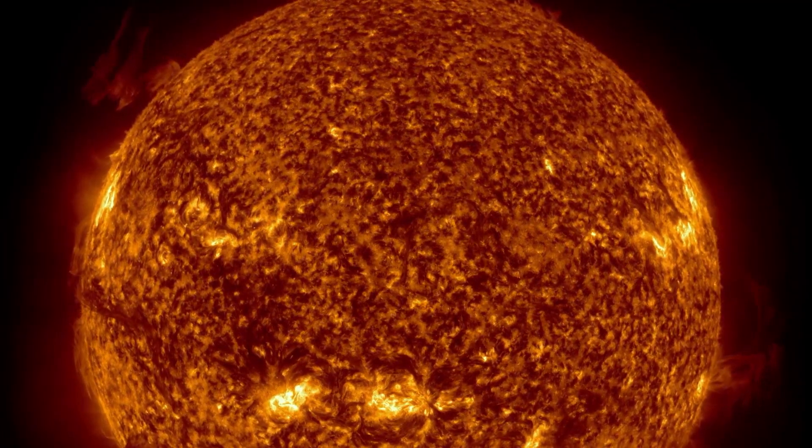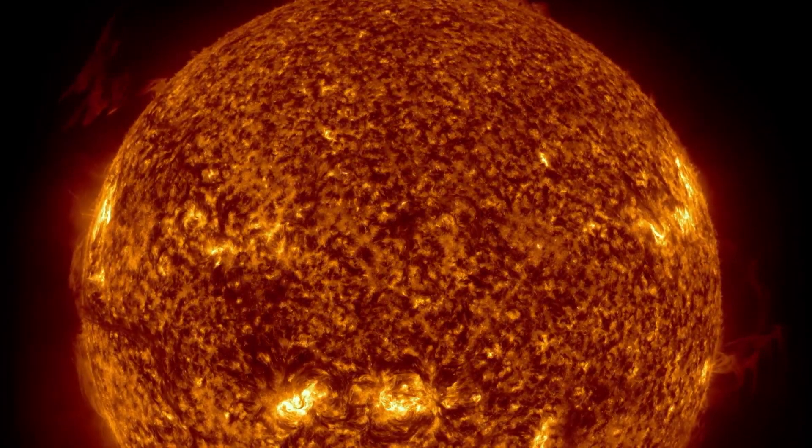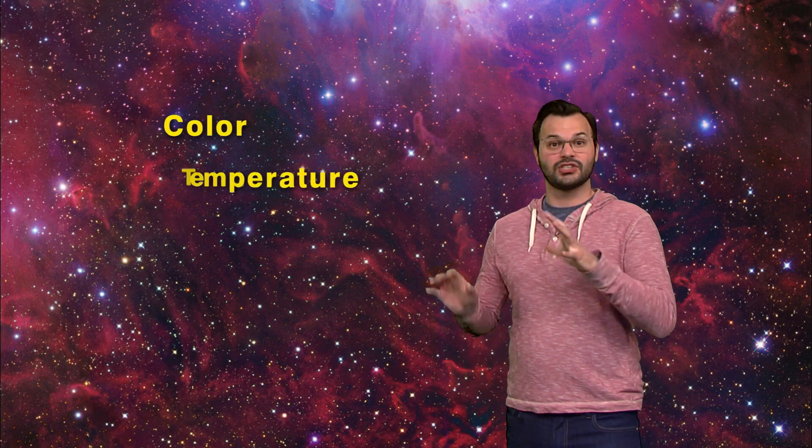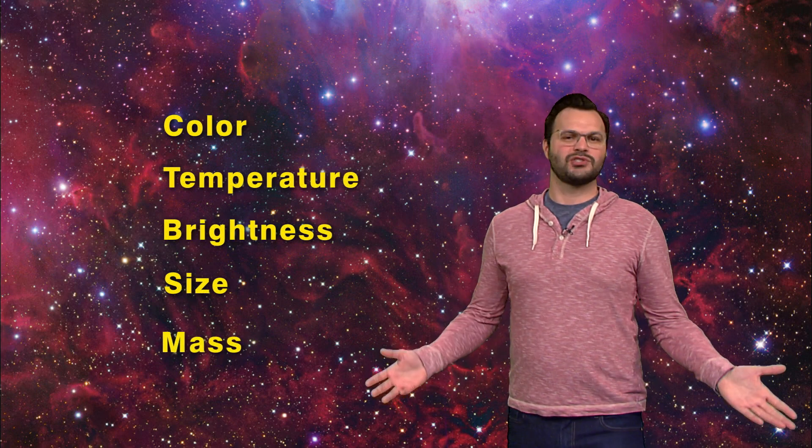For example, if we wanted to know why all the red stars were red, or the blue ones were blue, we'd look at them through telescopes over and over again. These observations would serve to gather data about the stars, like their colors, their temperatures, their brightnesses, their sizes and their masses, and anything else that we can think of.